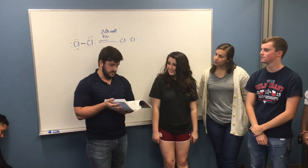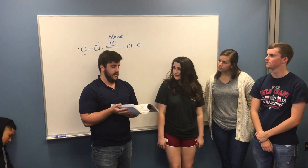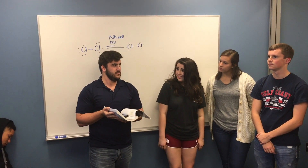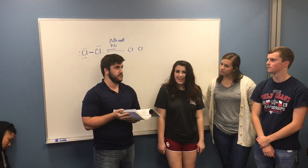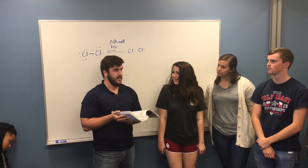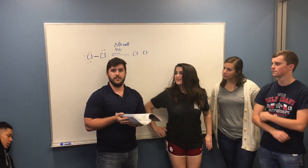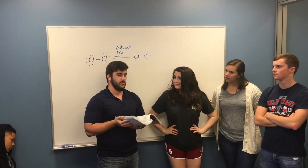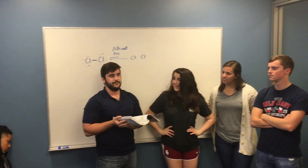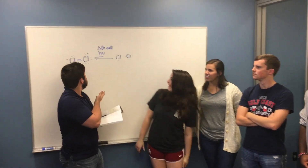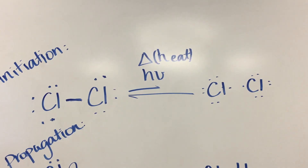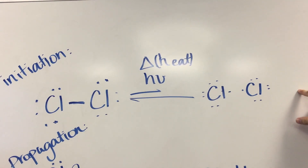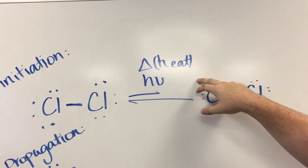Alkanes can also undergo halogenation. In the halogenation reaction, a C-H bond is replaced with a C-X bond, where X represents a halogen atom. Halogen atoms are found in the seventh group of the periodic table, such as bromine and chlorine. How does halogenation occur?